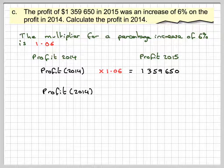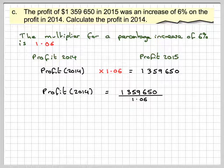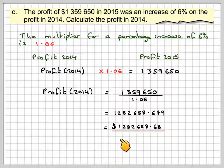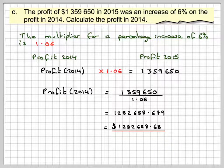So, the profit in 2014 is 1,359,650 divided by 1.06, which is 1,282,688.679. We're dealing with money, so we'll write that as $1,282,688.68.